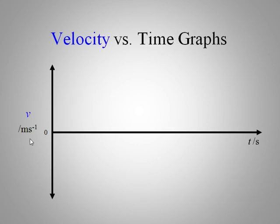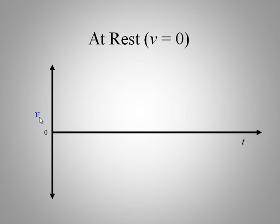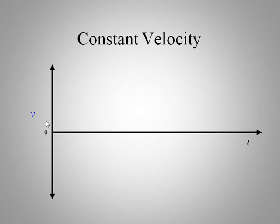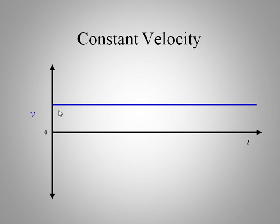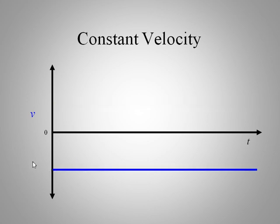Now let's look at velocity-time graphs, with velocity on the vertical axis. We can have both positive and negative portions. At rest means zero velocity — a point or line right at zero. Constant velocity is a horizontal line at some fixed velocity value as time continues. It could also be a constant negative velocity.